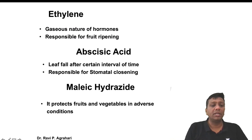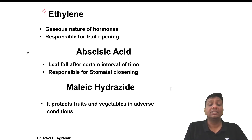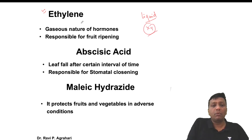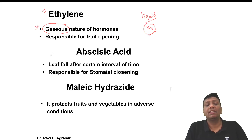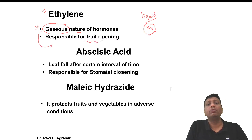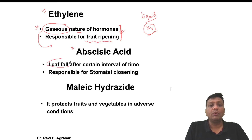Some other hormones are ethylene, abscisic acid, and malic acid. Regarding ethylene - auxin, gibberellin, and cytokinin were all liquid in nature and moved through the help of xylem. But ethylene is gaseous in nature - this is the main exception among hormones. This hormone is responsible for fruit ripening: whenever fruit ripening occurs, the amount of ethylene formation increases in the plant body.